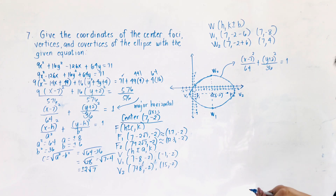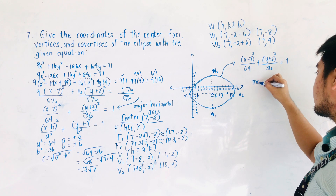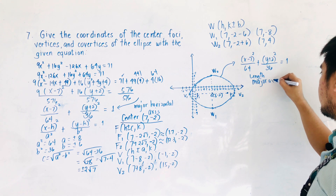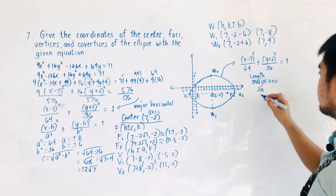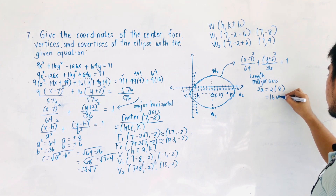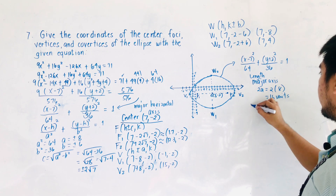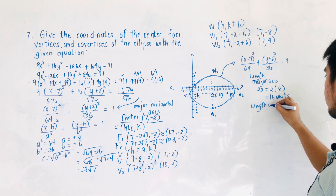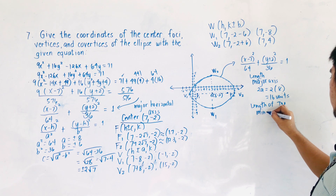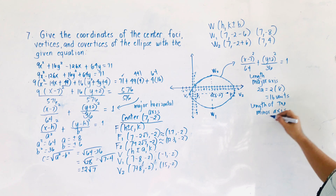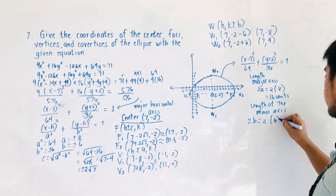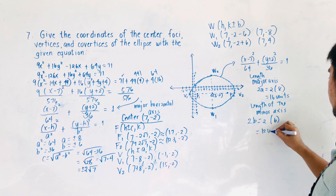If you're asked for the length of the major axis, that is 2a = 2 × 8 = 16 units. The length of the minor axis is 2b = 2 × 6 = 12 units.